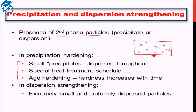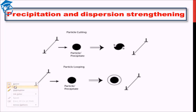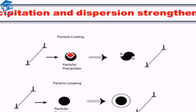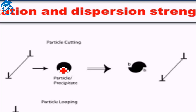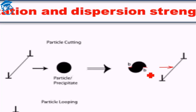Why does the presence of a second phase matter, and how exactly does it strengthen the material? The possible mechanisms are shown here for precipitates, though similar phenomena can occur in dispersion strengthening as well. If the precipitate particle is not very hard, the dislocation can cut through it — creating a ridge or step — and reach the other end. But this requires a lot of energy and stress, therefore leading to an increase in strength. This is known as particle cutting or precipitate cutting.